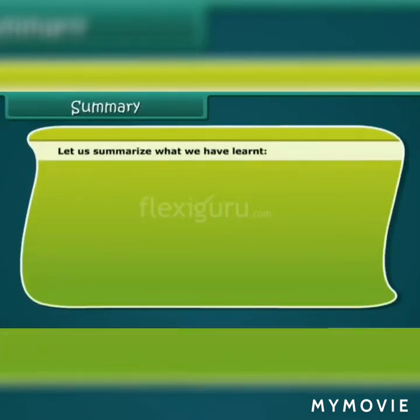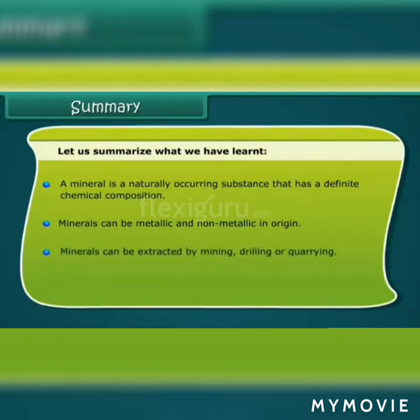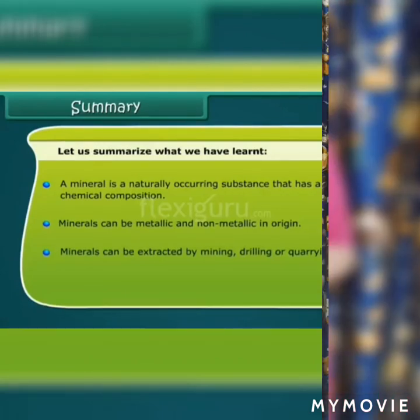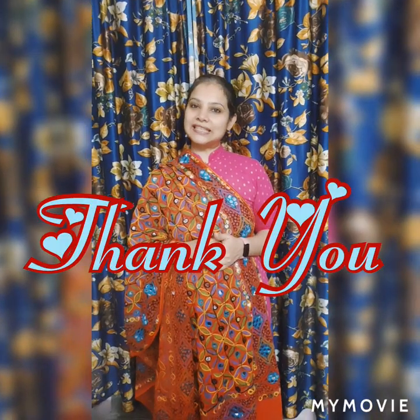Let us summarize what we have learned. A mineral is a naturally occurring substance that has a definite chemical composition. Minerals can be metallic and non-metallic in origin. Minerals can be extracted by mining, drilling or quarrying. I hope you must have understood the topics very well and your concepts are clear. Thank you. Stay fit, stay healthy and stay safe.